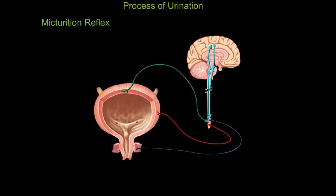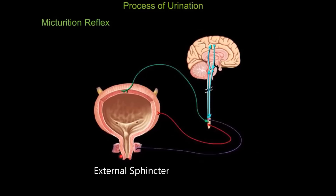There are two urinary sphincters: an internal sphincter, which is closest to the urinary bladder, composed of smooth muscle and under involuntary control, and an external sphincter, which is composed of skeletal muscle and under voluntary control. As the smooth muscles lining the urinary bladder contract, the urinary sphincters relax and open, allowing urine to pass through into the urethra.